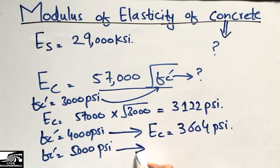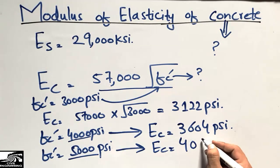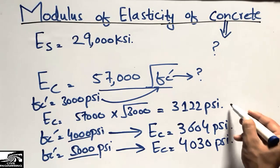We get the elasticity of the concrete equal to 4,030 psi. So these are the elasticity of the concrete for various grades of concrete.